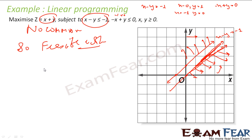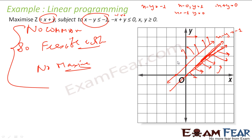There is no common area, so there is no feasible solution, meaning no maximum exists. This equation has no common area: one region goes this direction, another goes that direction, and x > 0, y > 0 further restrict. You take any area - it will satisfy some equations but not all. There is no one area which satisfies all equations, so no feasible solution.